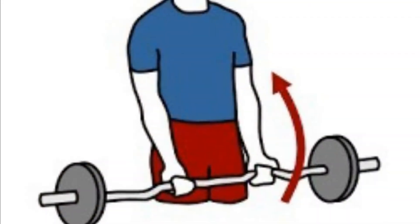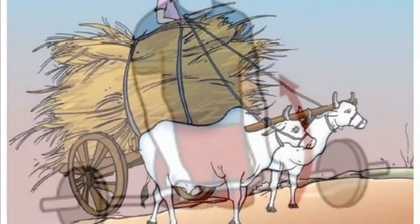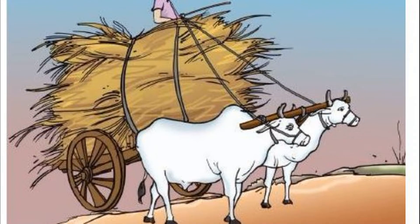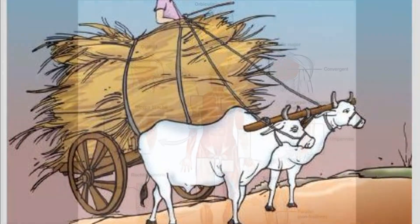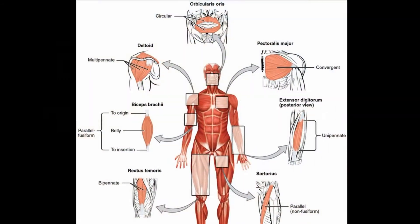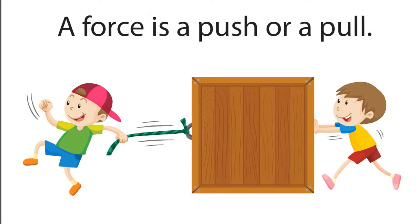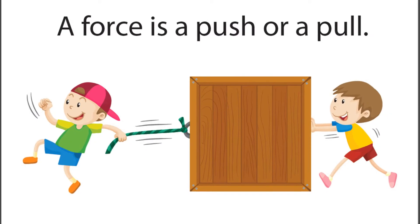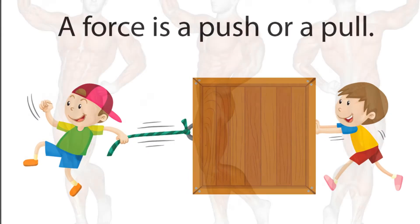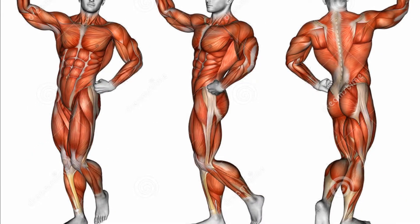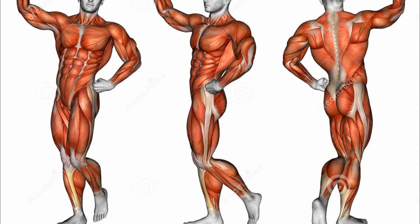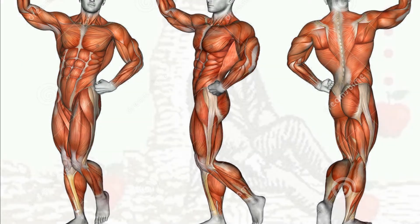Muscular force: All animals and human beings use their muscles to do work. The muscles exert a force that brings about motion. A push or a pull can also change the speed of motion. Muscular force can also change the shape of bodies.